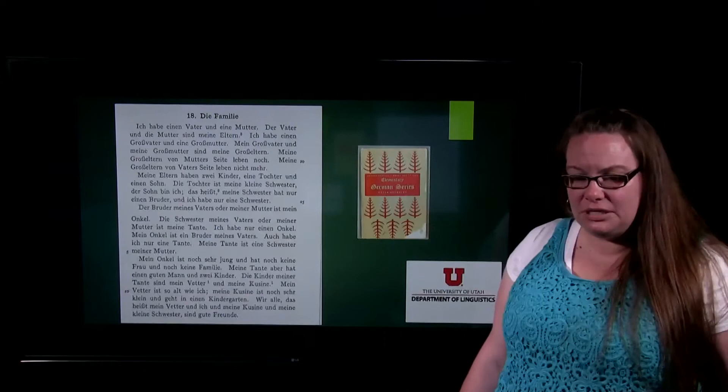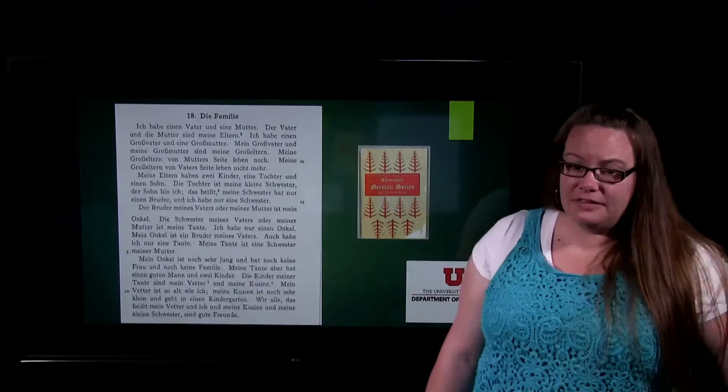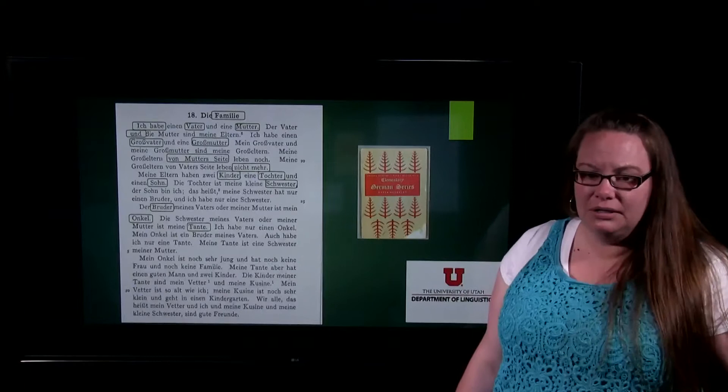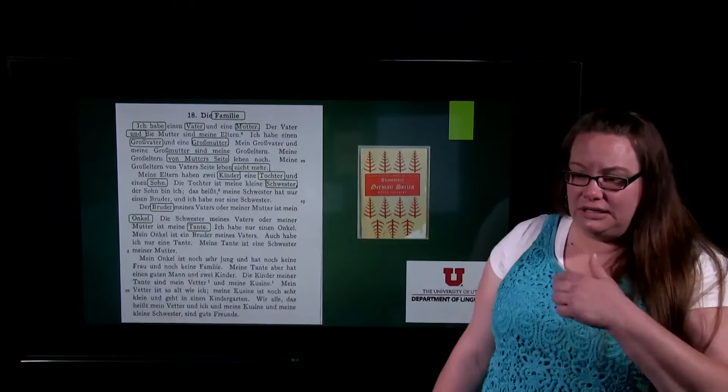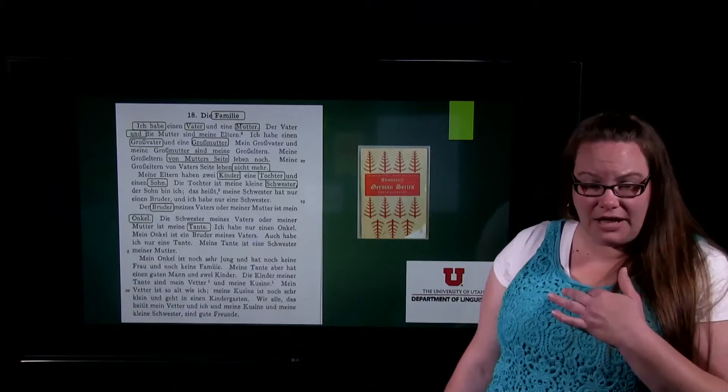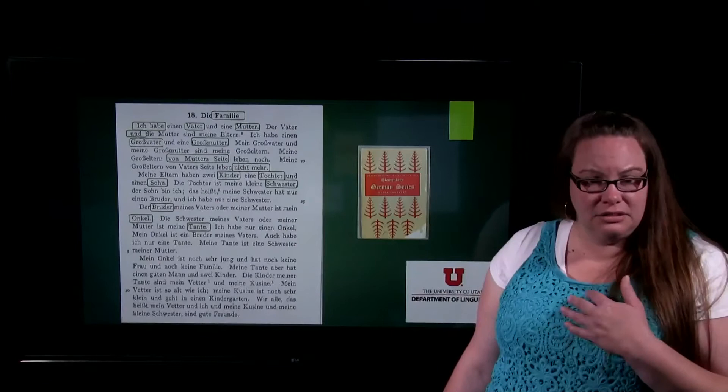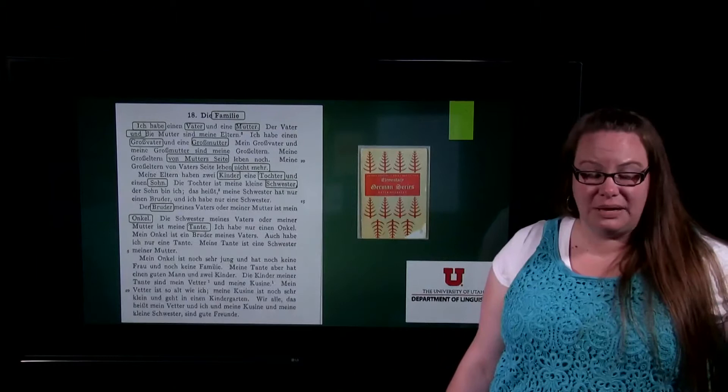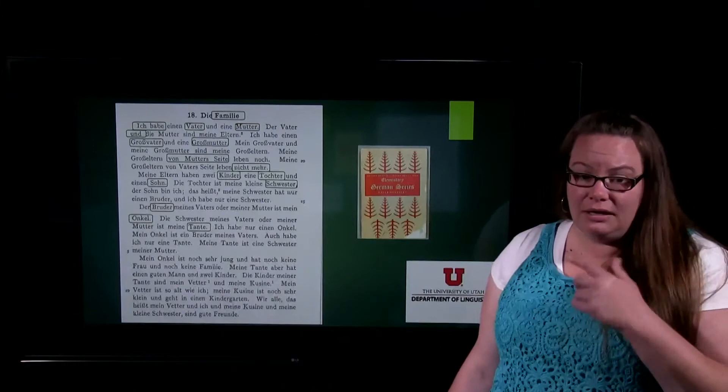I didn't quite finish the whole passage, but I think there are some words in there that you will have understood. I'm going to go through it again and help you understand a little more. Some of the words show where English developed. It starts with 'ich' — 'ich habe' means 'I have.' 'Ich habe einen Vater und eine Mutter. Der Vater und die Mutter sind meine Eltern.' The word 'Eltern' doesn't look like 'parents,' but it could be related to the word 'elders.'